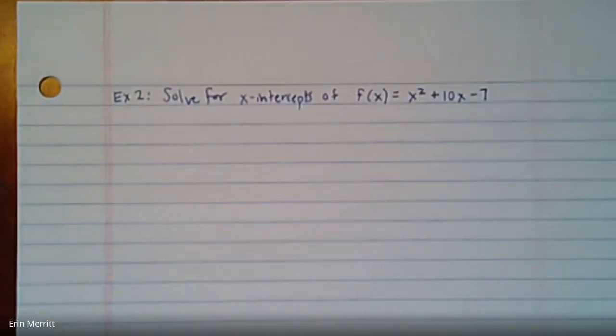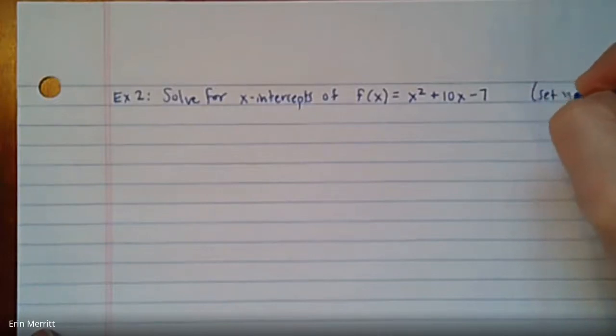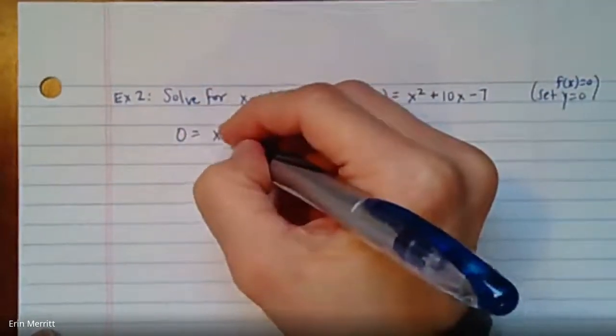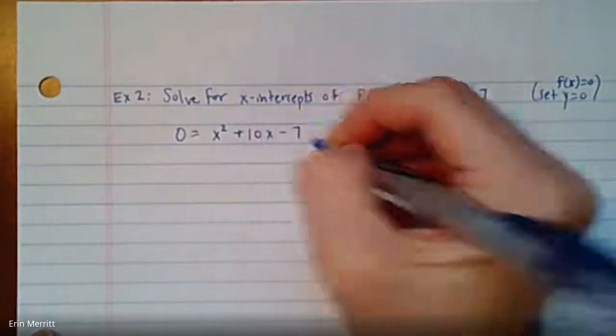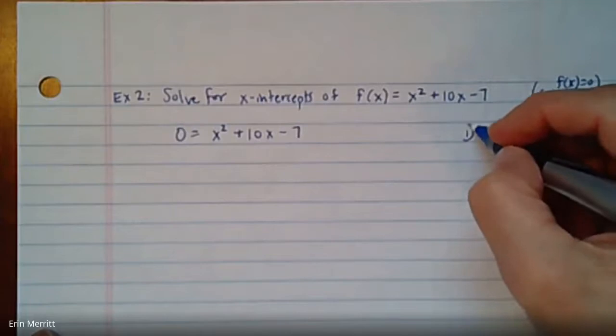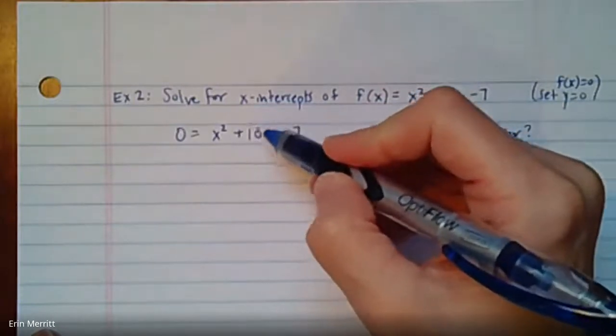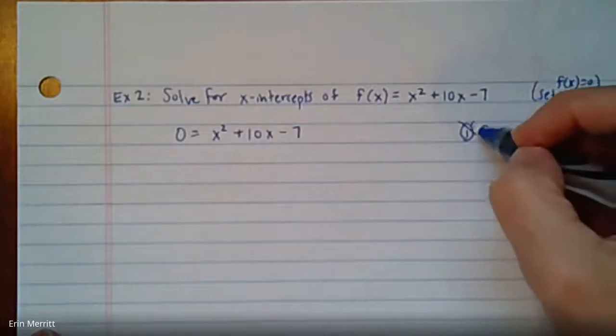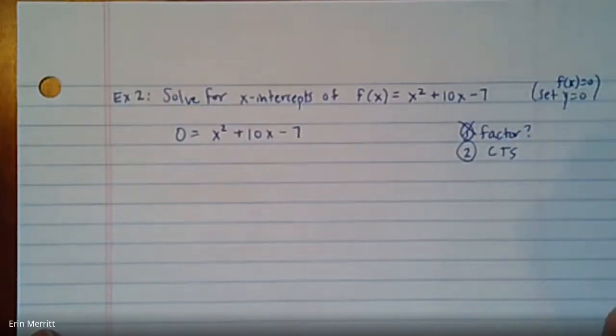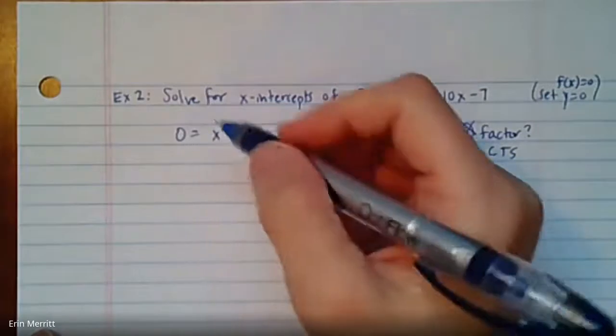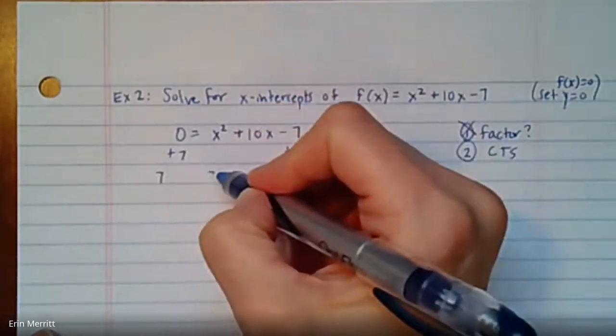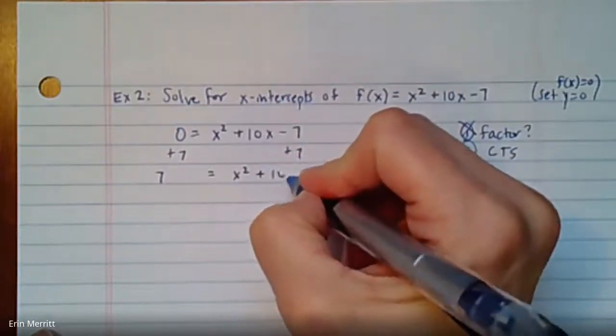The equation is f of x equals x squared plus 10x minus 7. When you hit one like this, I would absolutely want you to first say, if I'm looking for x-intercepts, that means set y equal to zero. When I say y equal to zero, that's synonymous with set f of x equal to zero. So I can put a zero in on the left and then x squared plus 10x minus 7. I would absolutely try to factor it first. If you can factor it, do it. You might already look at this and go, what adds to 10 multiplies to 7? Nothing. So if factoring doesn't work, here's where completing the square is going to come in.